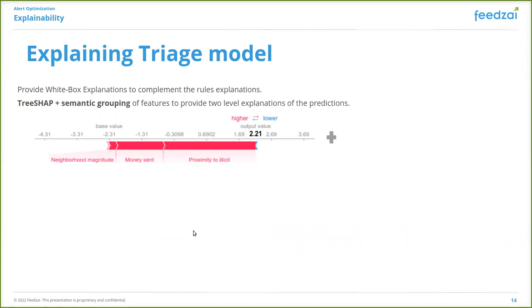On top of the promising results, we use TreeSHAP and semantic grouping of features to provide white box explanations of our predicted scores. Please note that this was a follow-up work that was not included in the original paper.